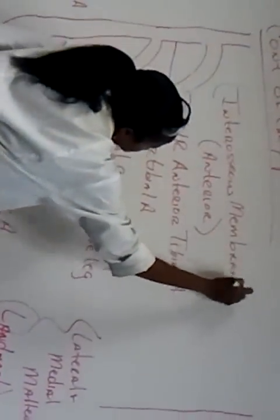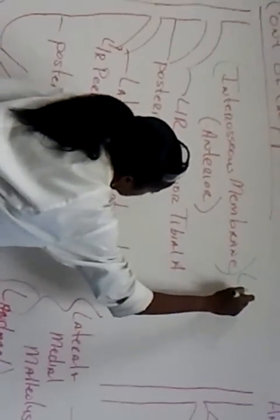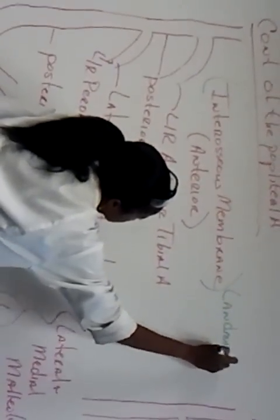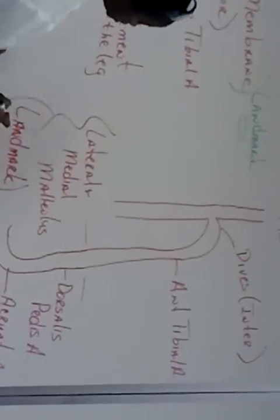Inguinal ligament, landmark. Adductor hiatus is a landmark. That's a landmark. Diving through here, this interosseous membrane, it's a landmark. And that's only for the anterior tibial artery? Yes, only for the anterior tibial artery as it comes off that popliteal artery. Medial and lateral malleolus landmark.